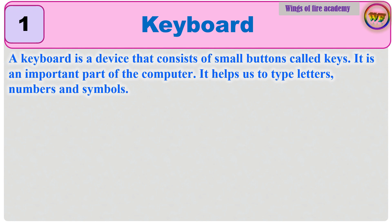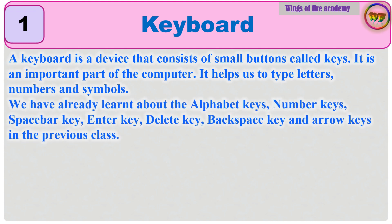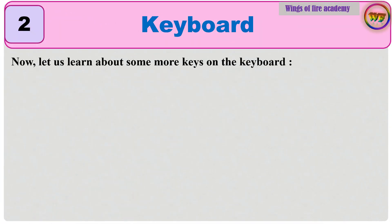A keyboard is a device that consists of small buttons called keys. It is an important part of the computer. It helps us to type letters, numbers and symbols. We have already learnt about the alphabet keys, number keys, spacebar key, enter key, delete key, backspace key and arrow keys in the previous class. Now let us learn about some more keys on the keyboard.